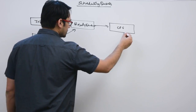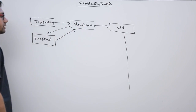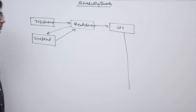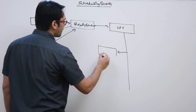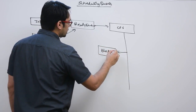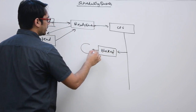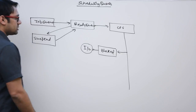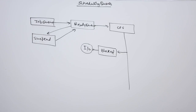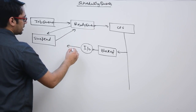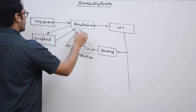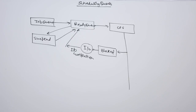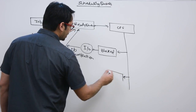When a process is executing inside the CPU, it may require some kind of input/output. Therefore the process will go to the blocked state. The process is currently doing I/O, and as soon as the I/O is finished — I/O completion — that process can again go back to the ready state.